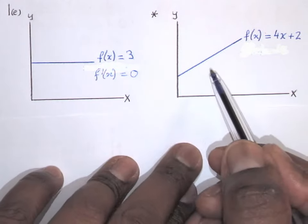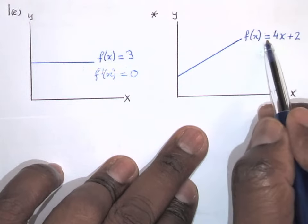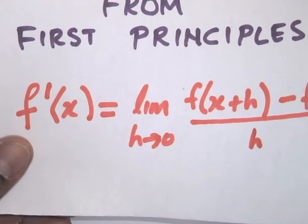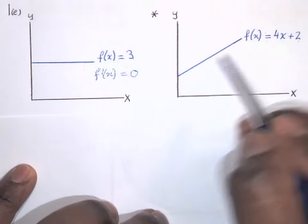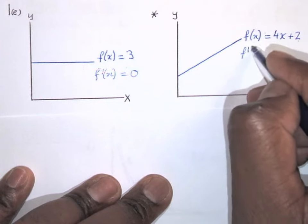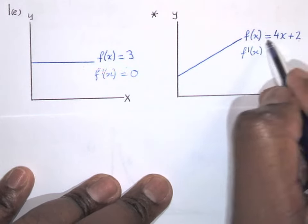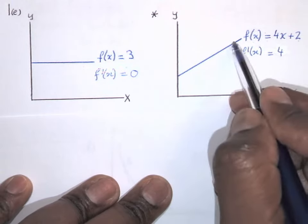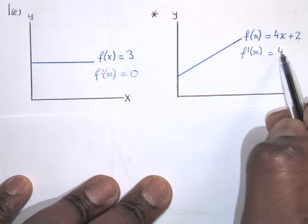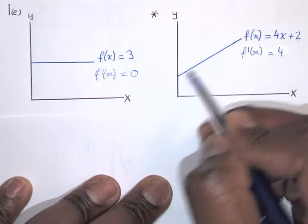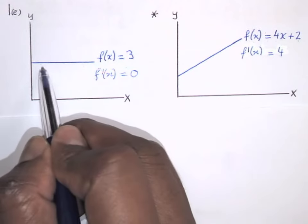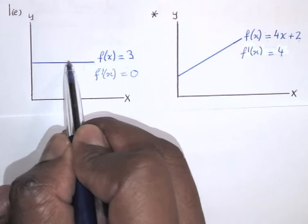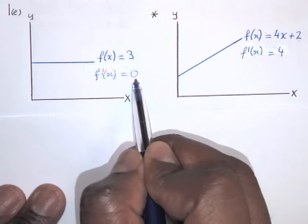Let's make another example. If f(x) equals 4x plus 2, and you use the long route using first principles, you will also find that f'(x), which is the gradient of this function, will be equal to 4. The gradient of this function is always 4 — it's constantly 4. The steepness of this function doesn't change. It's always 4. Similarly, the gradient of the constant function is 0; the slope is always 0.